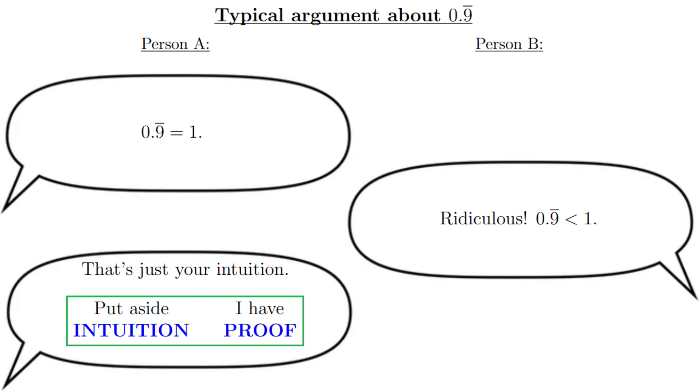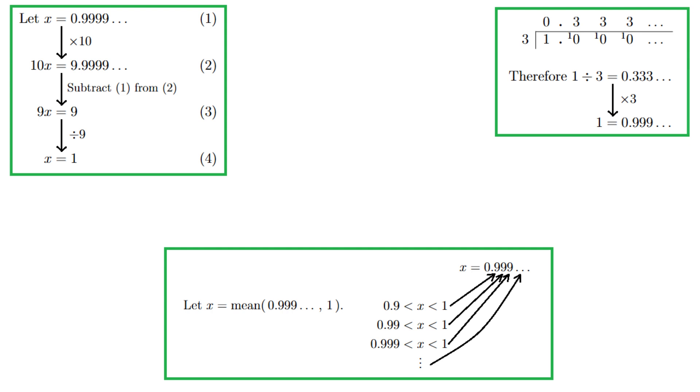Person A will present one of the standard supposed proofs that 0.9 recurring equals 1. But the problem is that all of these commonly presented supposed proofs do not, in and of themselves, actually meet the standards of rigorous mathematical proof. They're what I would call physicist-style derivations rather than rigorous proofs. In actual rigorous mathematics we need absolutely precise definitions, such as the definition of real numbers and the definition of how to evaluate an infinite decimal expression, and ideally we'd also want some kind of justification that the particular definitions chosen are sensible or useful.